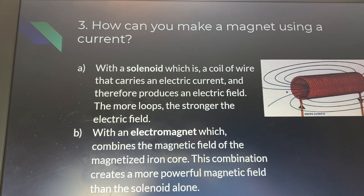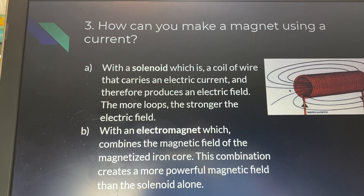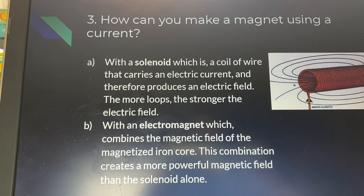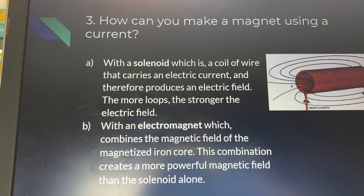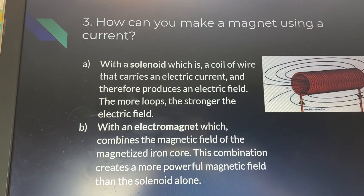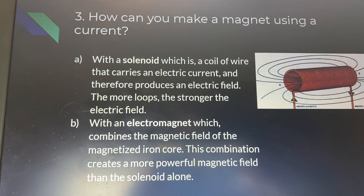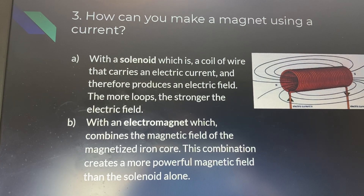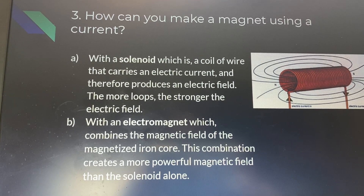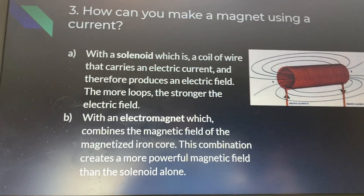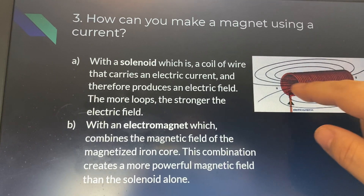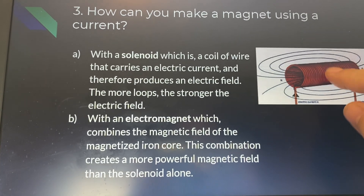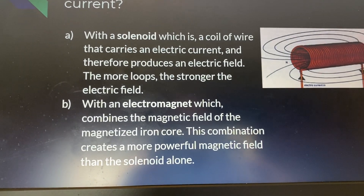So how can you make a magnet using a current? Well, there's a device called a solenoid, which is a coil of wire that carries an electric current and therefore produces a magnetic field. The more loops you have on it, the stronger the magnetic field.